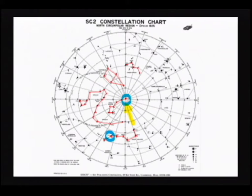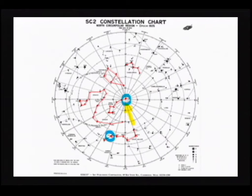That's one of the reasons why we do the proper motion lab — it shows you the motion of the stars. Unfortunately, over our lifetime, unless those stars are really, really close, we're never going to see any motion of the stars themselves.